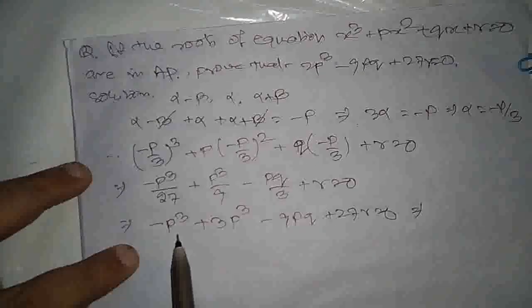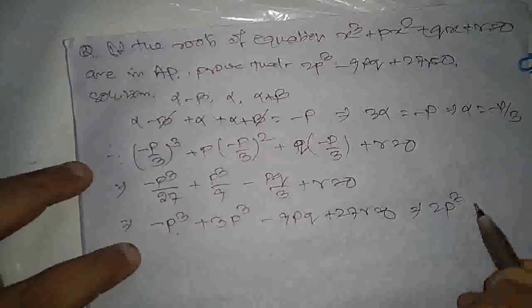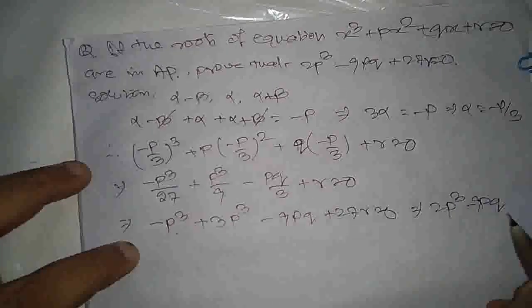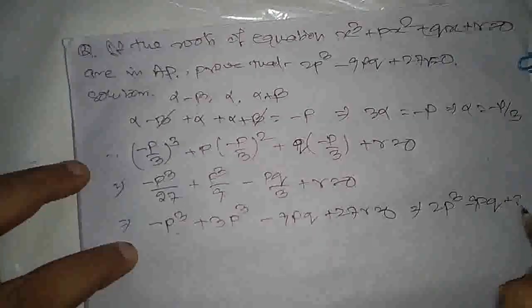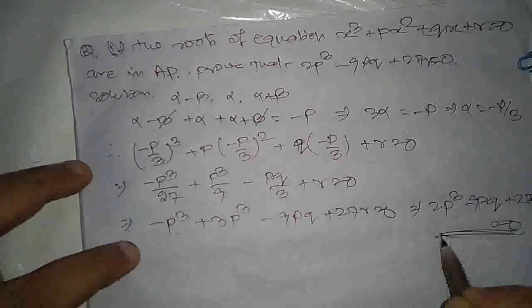3p³ minus p³ becomes 2p³. So 2p³ - 9pq + 27r = 0, which is what we needed to prove.